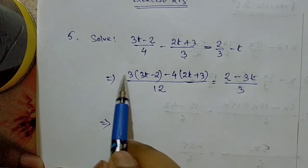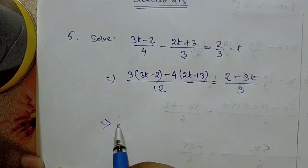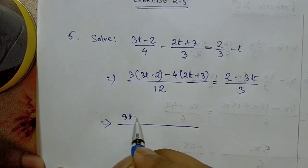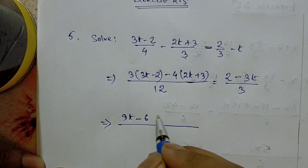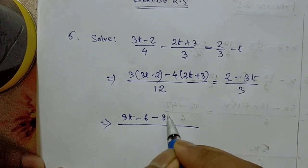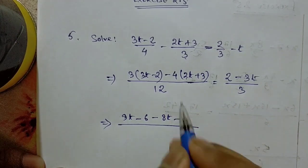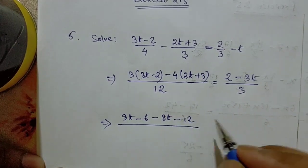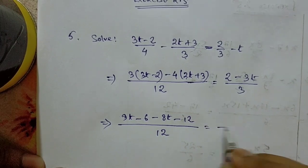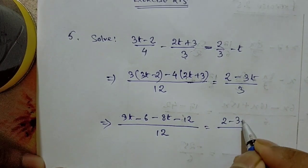Now we will break these brackets. 3 times 3t is 9t, minus 3 times 2 is 6, minus 4 times 2t is 8t, minus 4 times 3 is 12, is equal to (2 - 3t)/3.